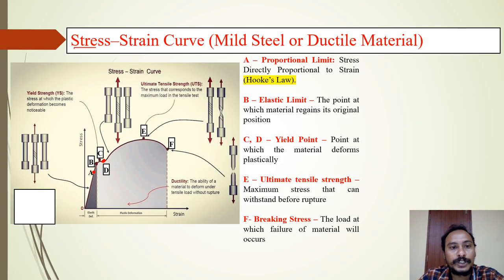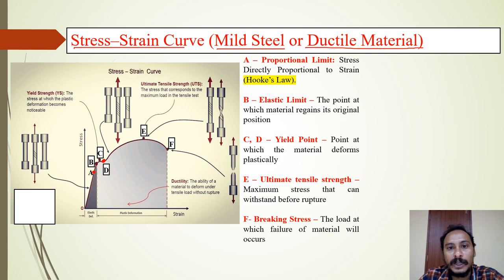Coming to the stress-strain curve for a ductile material like mild steel: if mild steel is subjected to tensile load, it will undergo different stages. Those are proportional limit, elastic limit, yield point, ultimate tensile strength, and then breaking stress.